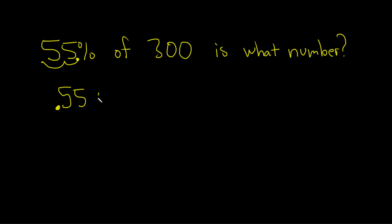Of means multiply, so we have times, and then here we have the 300. Is means equals, and what number is what we're looking for. Let's call it little n.